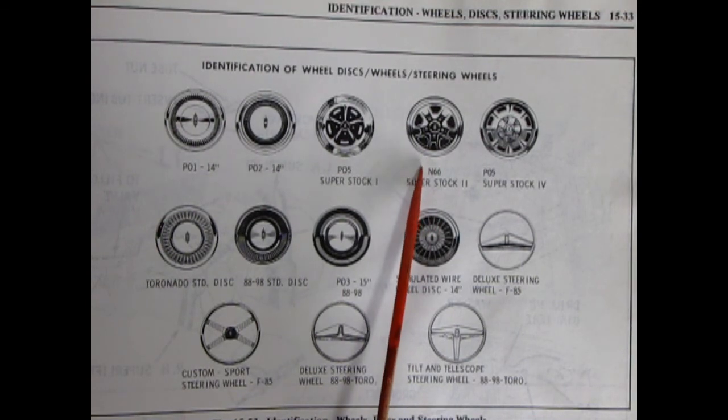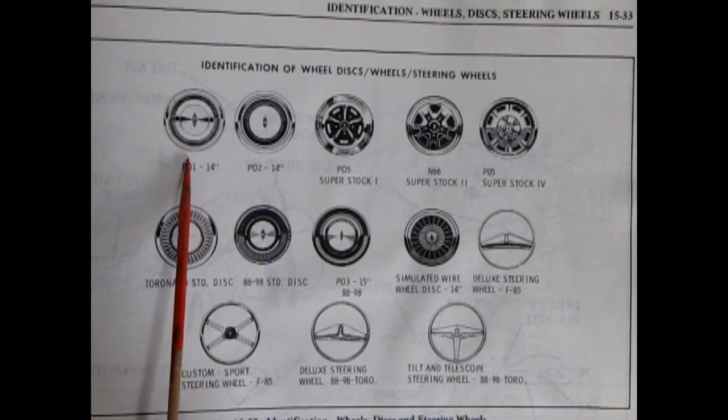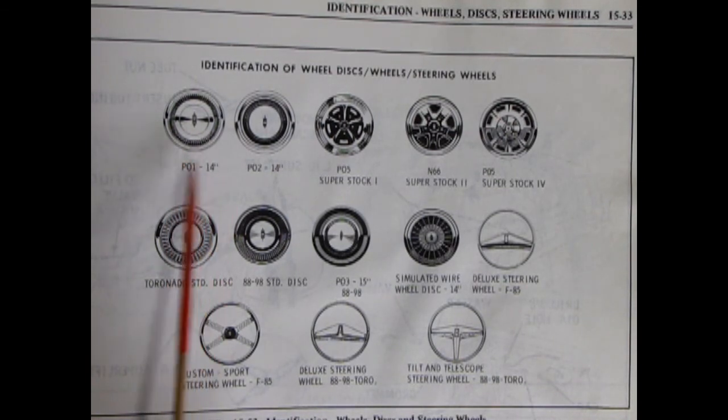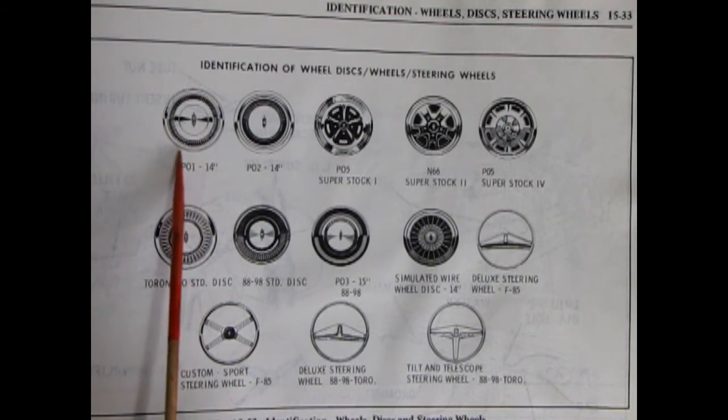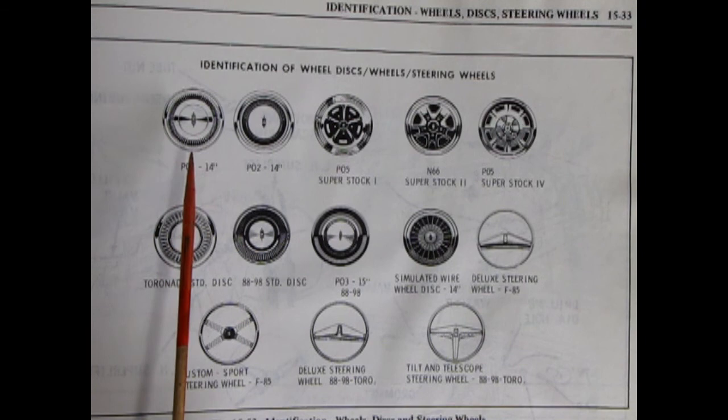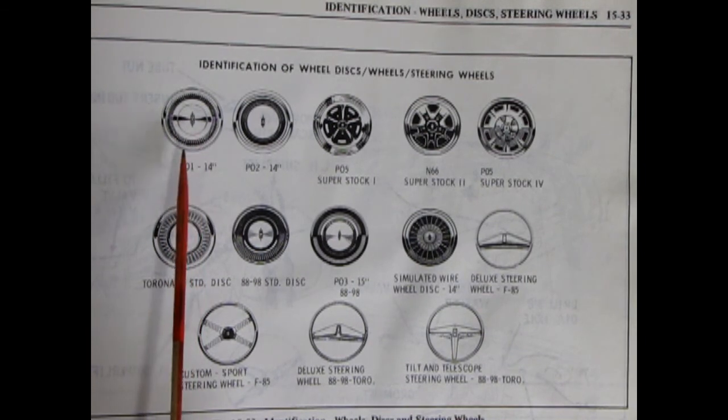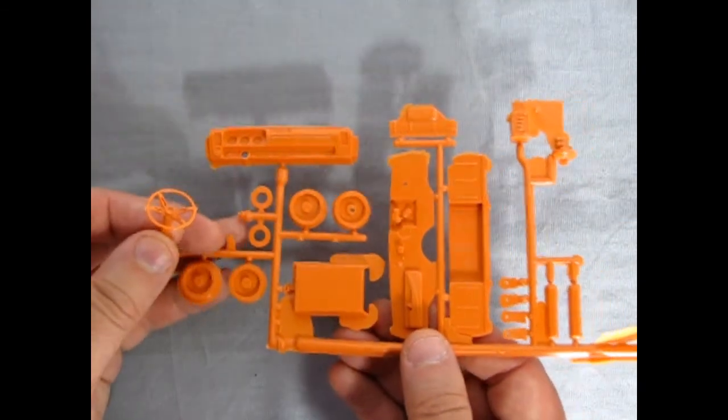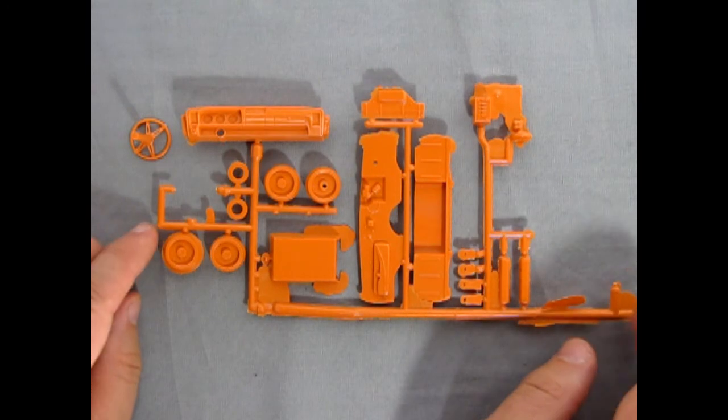These ones are in the 69 Oldsmobile by AMT, so if you want to do a little kit bashing you can. If you really want to go stock, if you can find it, the 1975 Oldsmobile by Johan has the P01-14s inside the kit as promotional wheels. So you could also adapt those into this kit. So there you go. This thing is very accurate to the Oldsmobile it is representing.